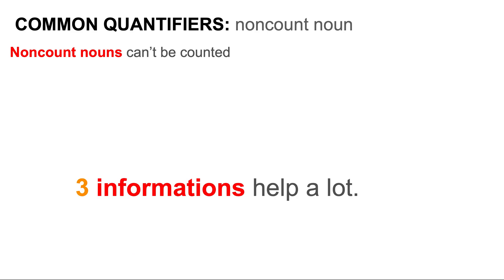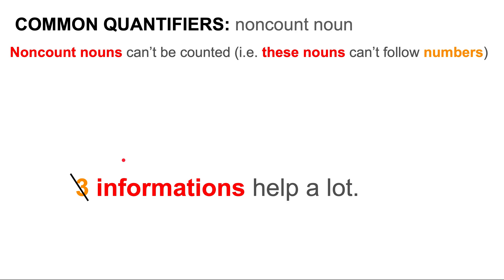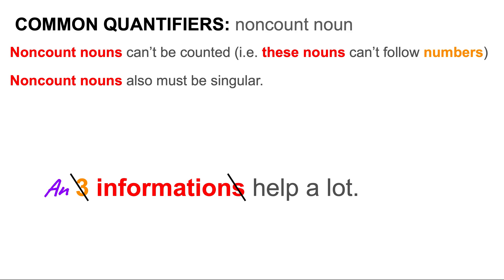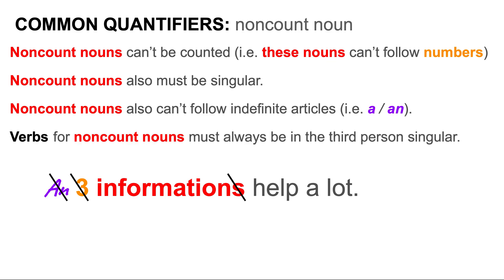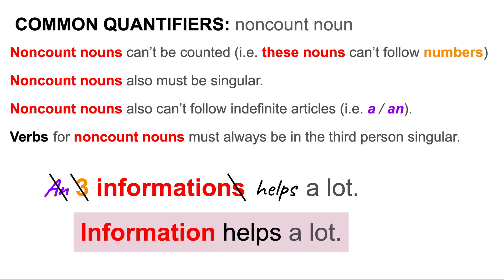As we mentioned, non-count nouns can't be counted. Therefore, these nouns can't follow numbers. Non-count nouns also must be singular, and they can't follow indefinite articles such as a and an. Lastly, verbs for non-count nouns must always be in the third person singular. A correct sentence for a non-count noun looks like this: Information helps a lot.